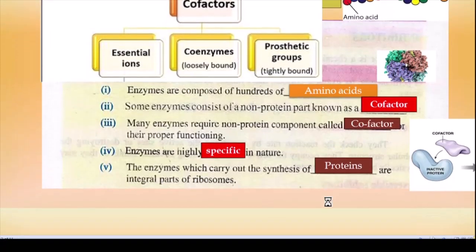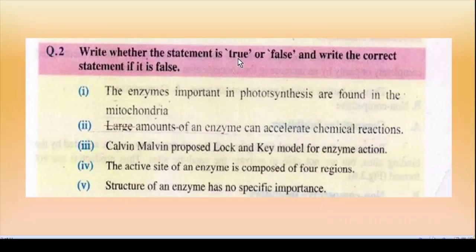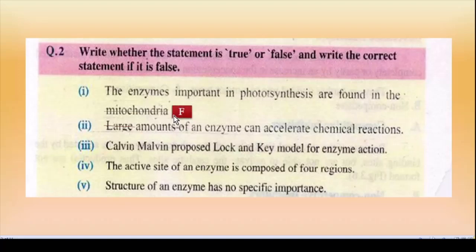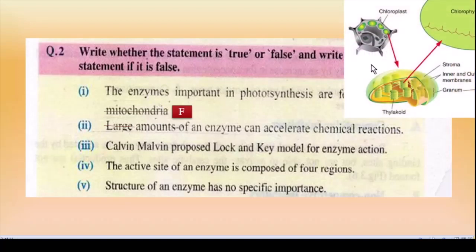Question number 2: True or False. Statement 1 — The enzymes important in photosynthesis are found in the mitochondria. Yahan pe baat ho rahi hai plant cell ki jisme photosynthesis ke enzymes present hain mitochondria mein — that is a false statement. Correct statement: photosynthesis ke enzymes present hote hain in the chloroplast, jahan chlorophyll banta hai aur photosynthesis (sugar formation) hoti hai.